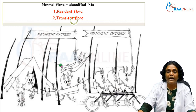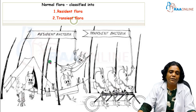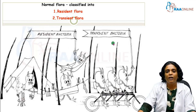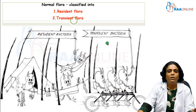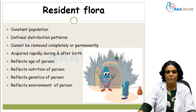Resident flora means they are the permanent flora — they will always be present in our body as long as we live. Even though they are disturbed, they reestablish themselves. Transient flora, on the other hand, are the temporary flora. Most pathogens fall under the transient flora category. They will be loosely entrenched in our skin, and if we scrub them, they can go away.